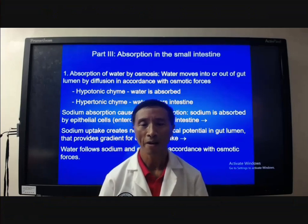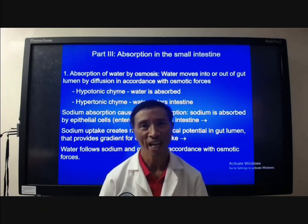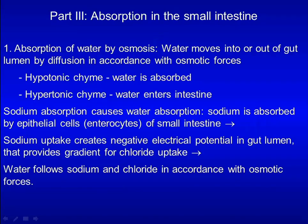Now let's move to part three: absorption in the small intestine. Water is absorbed by osmosis. It begins with sodium absorption, which creates a negative electrical gradient. The electrical gradient drives chloride uptake, and water then follows sodium and chloride by osmotic forces.